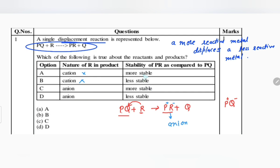Now we go to the second column where it is written stability of PR as compared to PQ. What do you think, children? You can comment in the comment box. Always remember, PR is formed as a product and PQ is the reactant. If R can change PQ into PR, means PR is more stable than PQ because PQ is not very stable, that is why R could displace Q from PQ. So we can write here that PR is more stable than PQ.